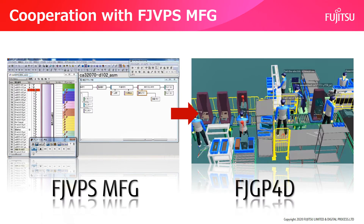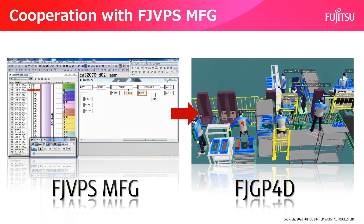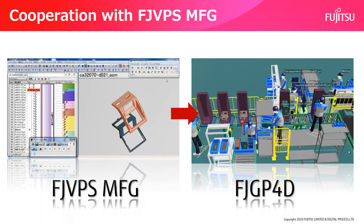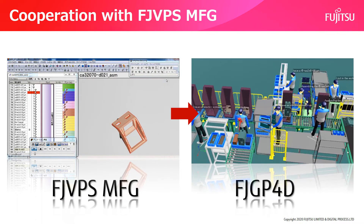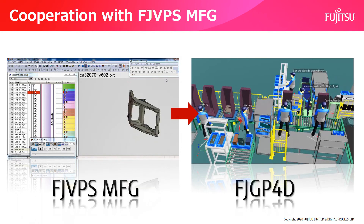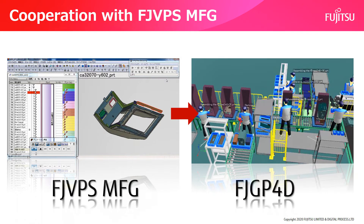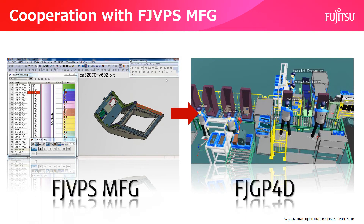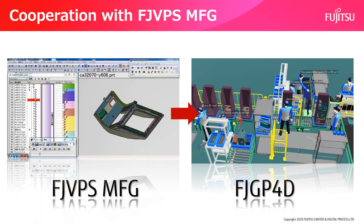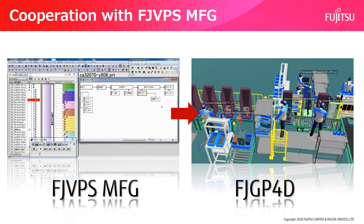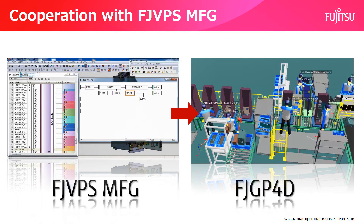By importing the operation procedure and process information simulated by FJVPS into FJGP4D and diverting it, it is possible to reduce the work procedure creation time and parts serving setting time on FJGP4D.